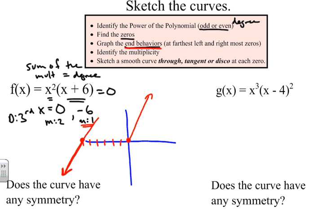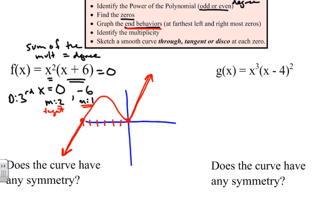Now we sketch the rest of the graph using the multiplicities. Going left to right, we travel to negative six and the multiplicity of one means the graph passes through. Then at zero with a multiplicity of two, the graph is tangent — it kicks back up, which makes sense because the end behavior rises on the right. There is no symmetry in this graph since it is neither even nor odd.